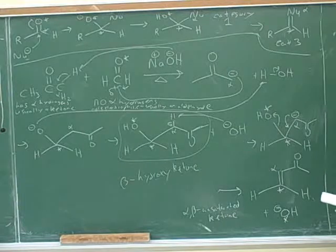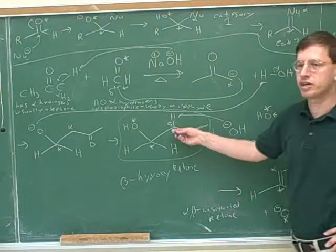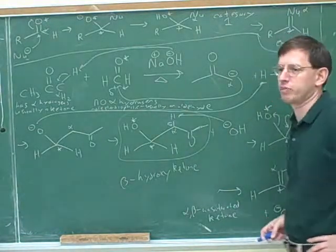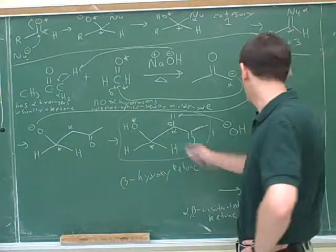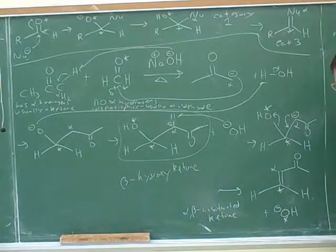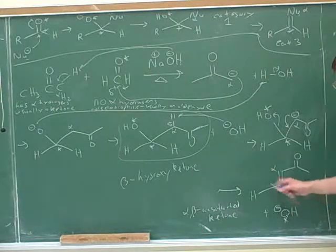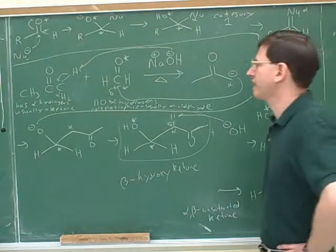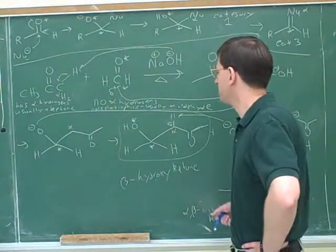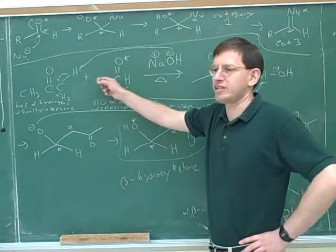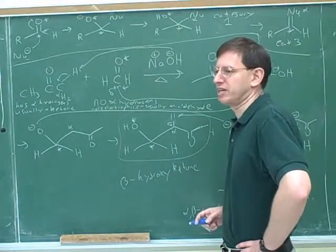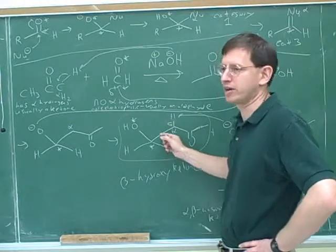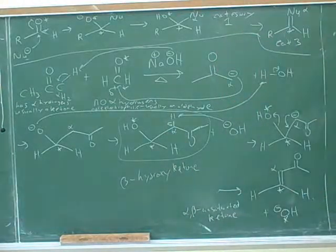With heat, you still only get one product — it's just a different product. With heat the reaction would move on further, especially if you're removing the hydroxide that's leaving to pull the reaction forward. The key for whether you get more than one product is not whether there's heat or not — it's whether you've set up the crossed aldol condensation well. Whether there's heat or not just determines what the product will be: in cold conditions you get one product, in hot conditions you get another.